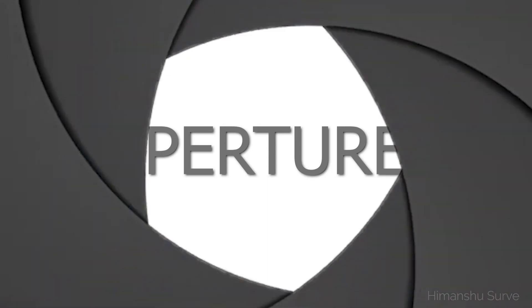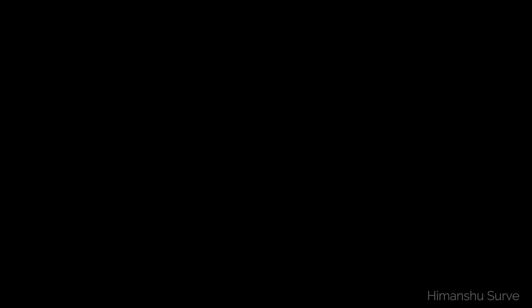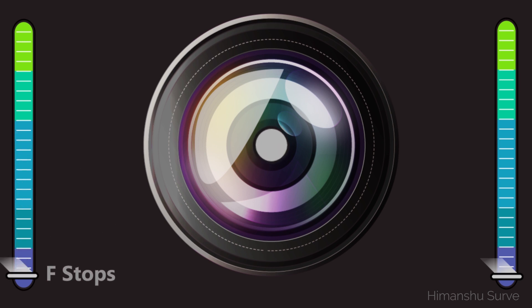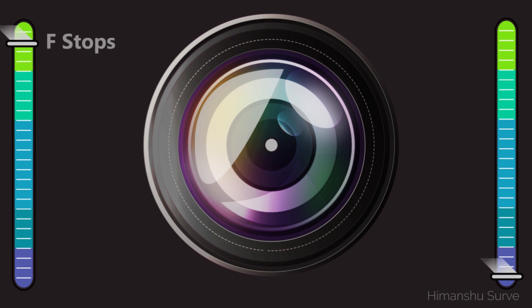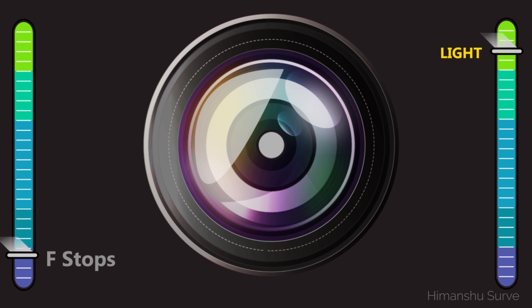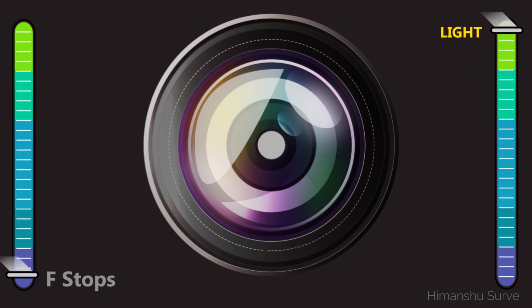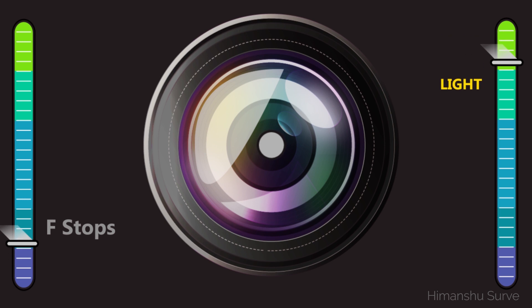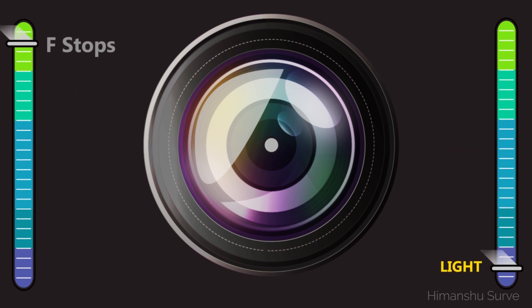Now let's talk about aperture. Aperture is the opening for the camera sensor. If the opening is wider, the f-stop is low. And if the opening is narrow, then f-stop is high. As the aperture is wider, the amount of light that goes towards the sensor is high. And if the aperture is narrow, then the amount of light that goes towards the sensor is low.